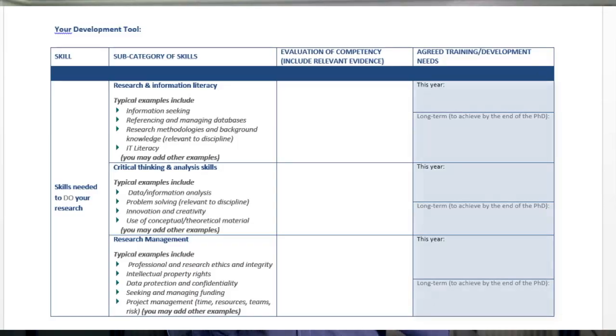You should also state what level it was, for example undergraduate, postgraduate or professional experience. The third column is your training and development goals for this year and in the long term. It will help if you discuss this with your supervisory team.